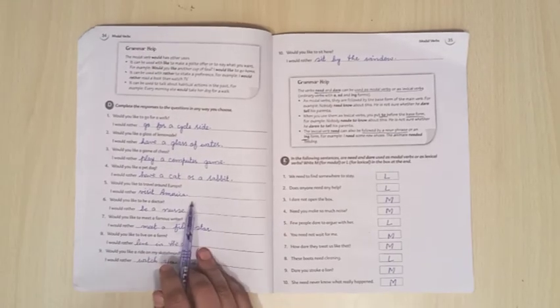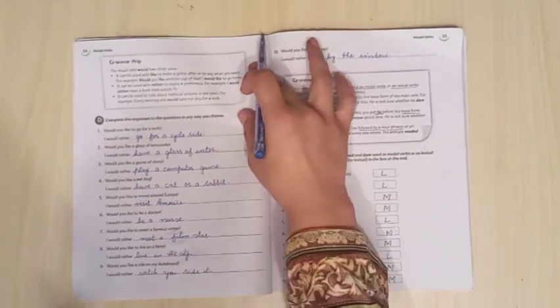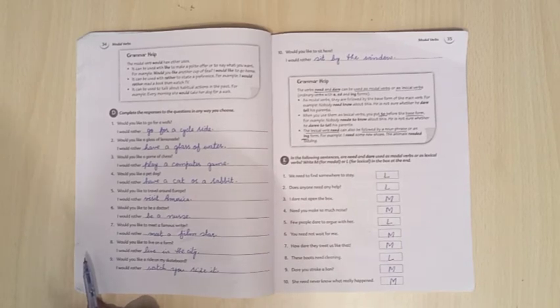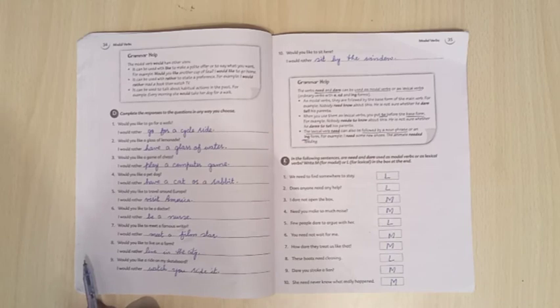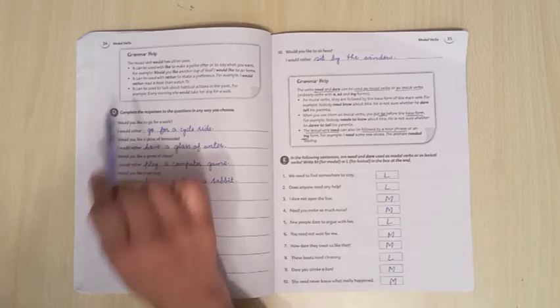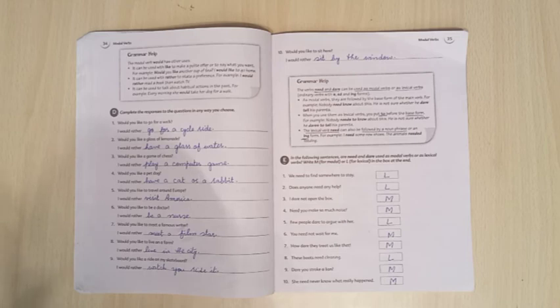Now come to the grammar help box on page number 34. The modal verb would has other uses. It can be used with like to make a polite offer or to say what you want. For example, would you like another cup of tea? I would like to go home. Or it can be used with rather to state a preference. For example, I would rather read a book than watch TV. You can see that it can be used to talk about habitual actions in the past. For example, every morning she would take her dog for a walk.